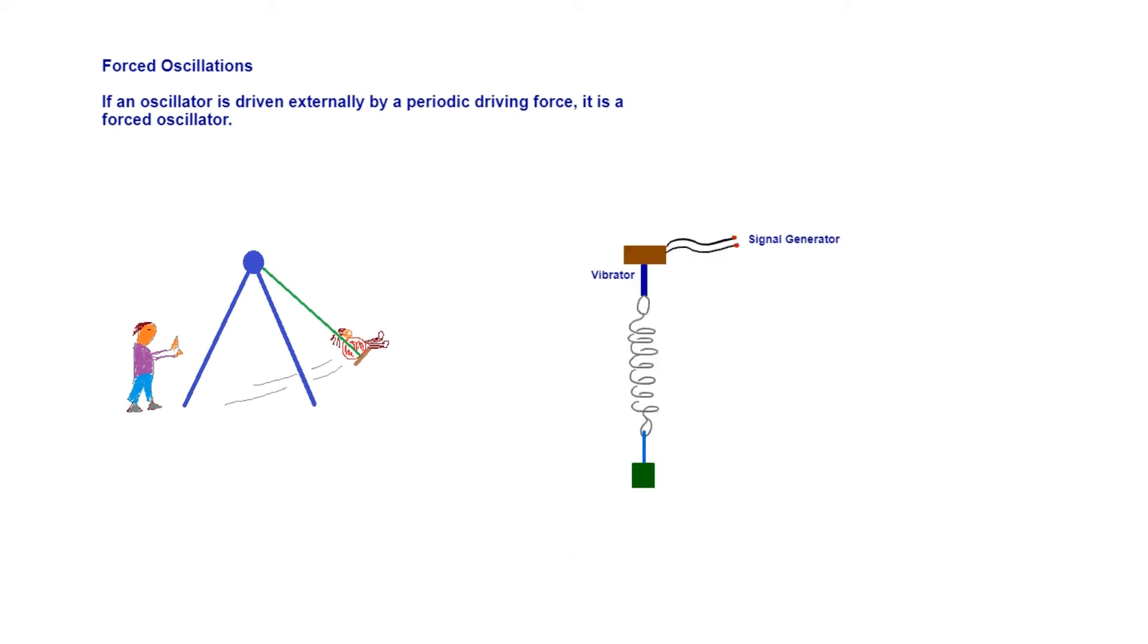Another example that you might see in a physics laboratory is getting a vibrator, connecting it to a signal generator, which causes the vibrator to oscillate up and down. And that's connected to a mass spring system. So that becomes a forced oscillator, because you've got an oscillator being driven by a periodic force.